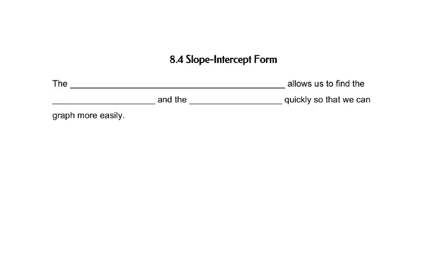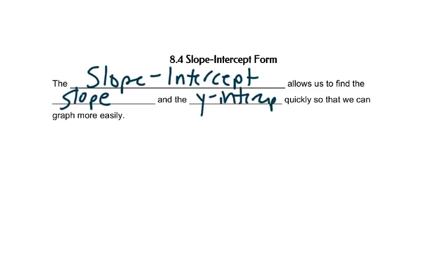Now we'll use that information about slope to help us graph. The slope-intercept form allows us to find the slope and the y-intercept more quickly so that we can graph more easily.